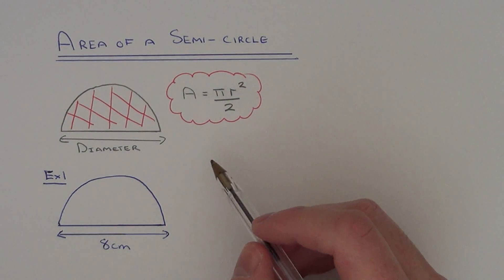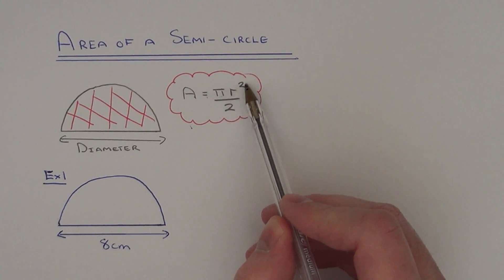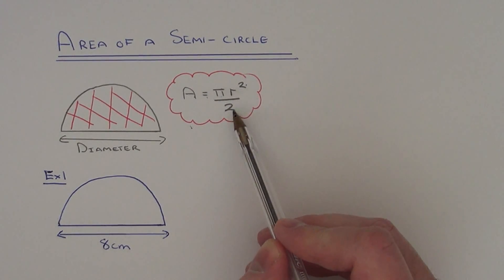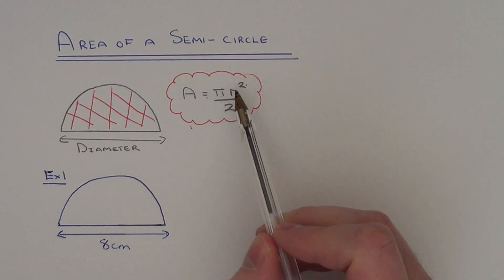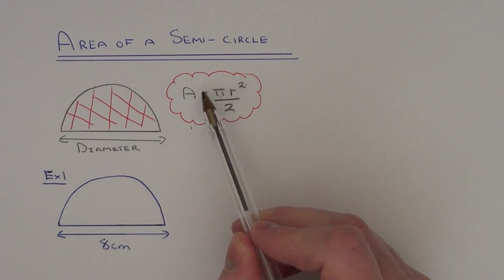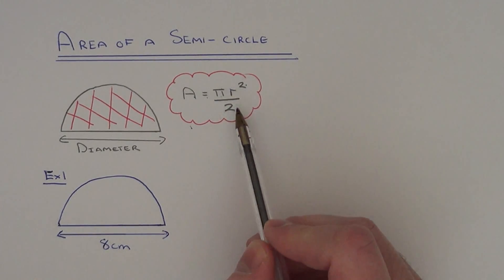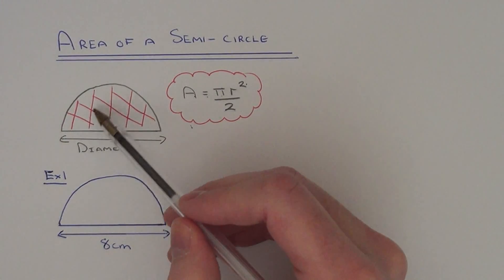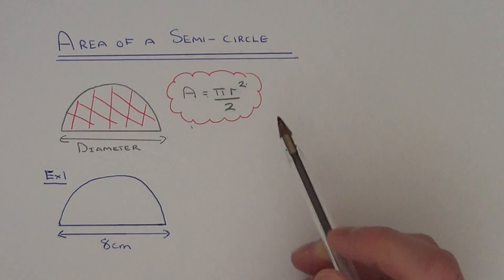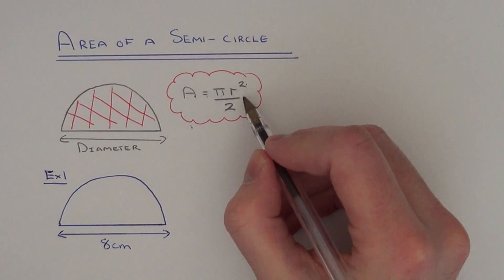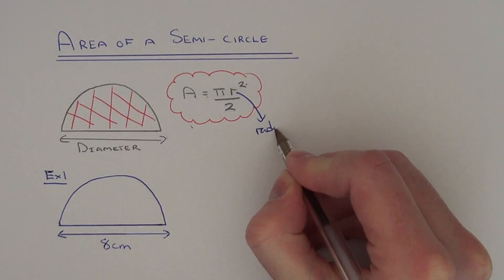The area of a semicircle can be worked out using the formula a equals pi r squared divided by 2. It's the same formula as the area of a circle (a equals pi r squared), but you divide by 2 because a semicircle takes up half the space of a full circle. You just substitute the radius into this formula.